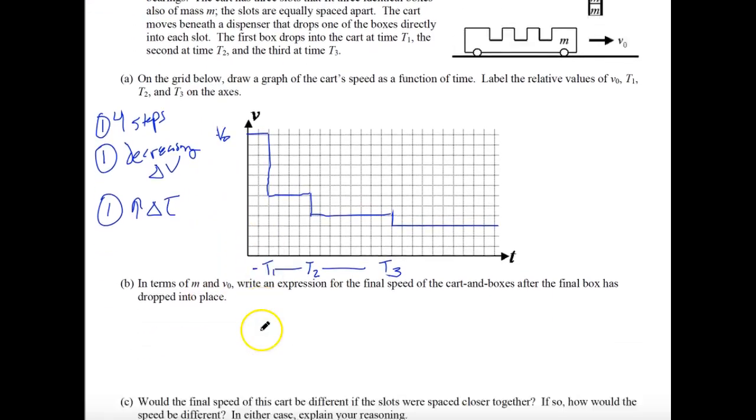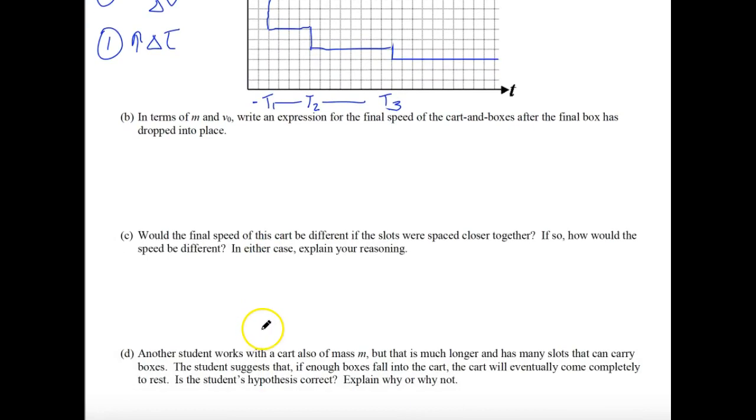In the next part, they want you to, in terms of M and V0, write an expression for the final speed of the cart and boxes after the final box has dropped into place. To do that, first thing you'll need to do is write a conservation of momentum equation. And so you can literally just say the total mass of all of the things in the system times the original speed of everything there. So you'd have to add all these up, so we're going to put the sum in here. We're just going to say the sum of all the masses times their original velocities should be equal to the total mass, since this is a collision that is inelastic and they all come together, times that final velocity.